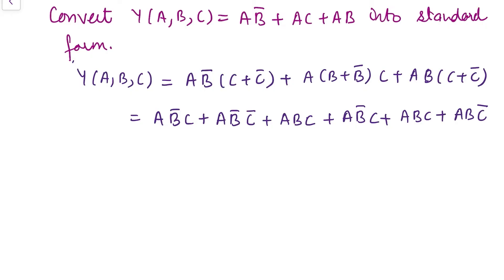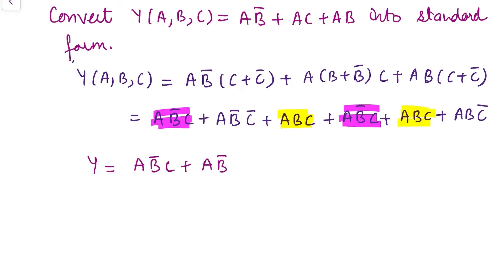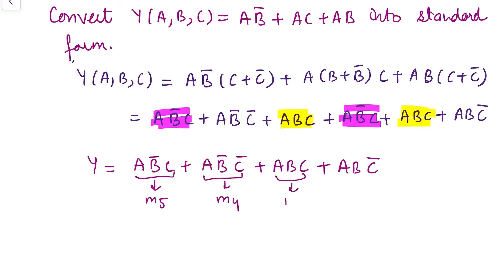Now let's check which terms are getting repeated. ABC and AB'C each appear twice, so they will be written just once. Therefore, Y = AB'C + AB'C' + ABC + ABC'. Looking at these minterms: AB'C is minterm 5, AB'C' is minterm 4, ABC is minterm 7, and ABC' is minterm 6. So Y can also be written as Σm(4, 5, 6, 7).